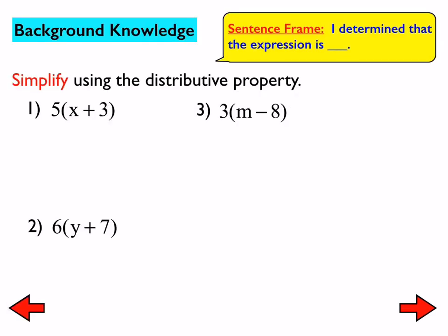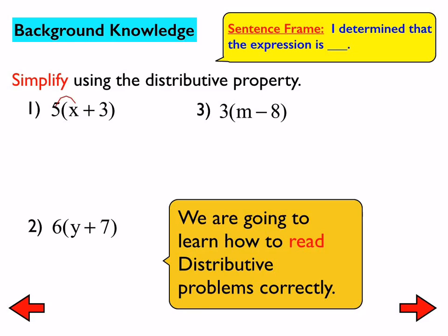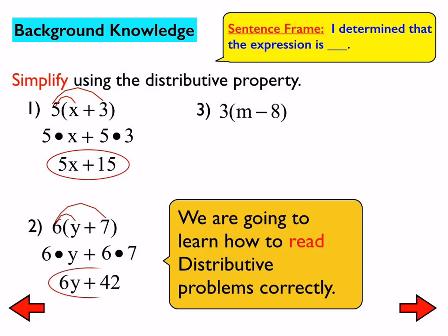All right, so let's get started here. Here's what we've been working on lately, except yesterday we took it to decimals and fractions, where we worked on how to state distributive property problems correctly, like 5 times the quantity of x plus 3 is equivalent to 5x plus 15, and so on.